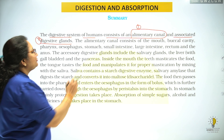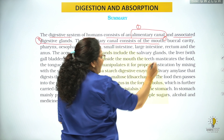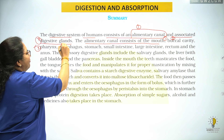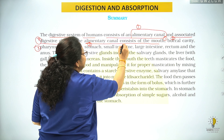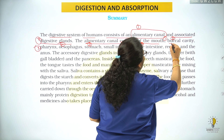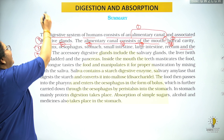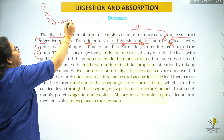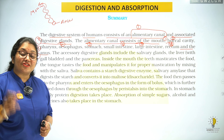Elementary canal consists of the mouth, then buccal cavity, third is pharynx, fourth is esophagus, esophagus leads into stomach, stomach leads into small intestine, small intestine leads into large intestine, large intestine leads into rectum, and rectum into the anus. So it is a tubular structure which starts from mouth and ends into anus.